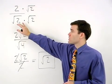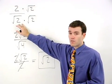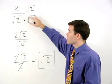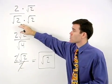So remember, to get rid of a square root in the denominator of the fraction, multiply top and bottom of the fraction by that square root.